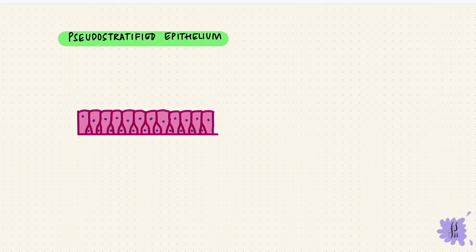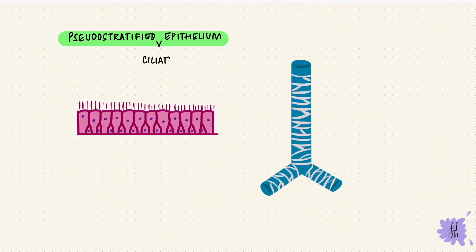Now this type of epithelium is ciliated in the respiratory lining in the trachea. So the lining of the trachea, that pseudostratified ciliated columnar epithelium.